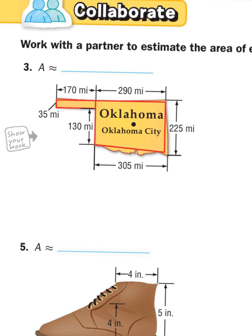Oklahoma has too many tornadoes and is hot and dry — anyway, when you look at Oklahoma it kind of looks like one big rectangle and a little skinny rectangle on the side. Let's start with that smaller easy rectangle: length times width, which is 35 times 170. Typing that in: 35 times 170 equals 5,950 square miles for that rectangle.